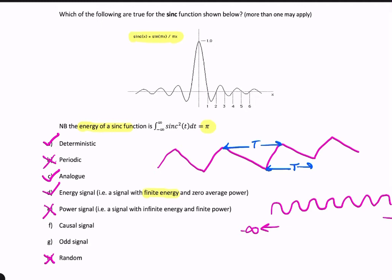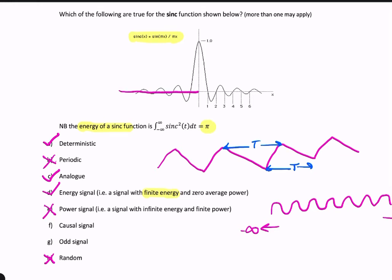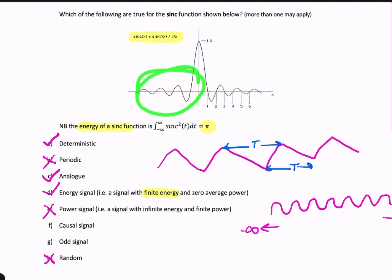The next option is causal. A causal signal is a signal which only exists for positive time — for negative time, a causal signal should be zero. So if this signal were causal, it would look like that. But because our signal is clearly non-zero for t less than zero, this isn't a causal signal.